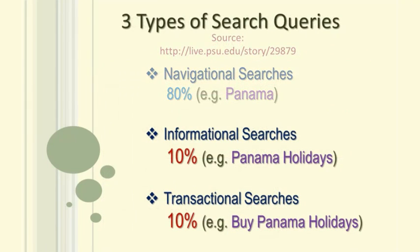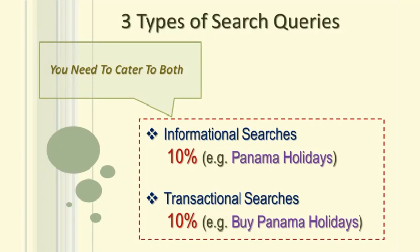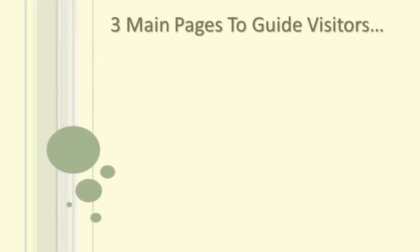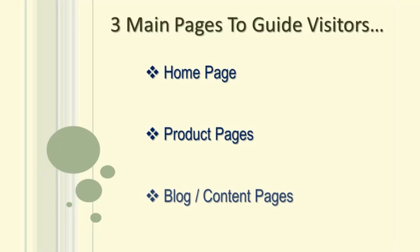It is pretty obvious, therefore, that your website has to account for the 20% of the searches that are informational and transactional in nature. If you are selling a product or service on your website, then the three main pages to guide your visitors will be the homepage, the product page or pages, and the blog or content pages.